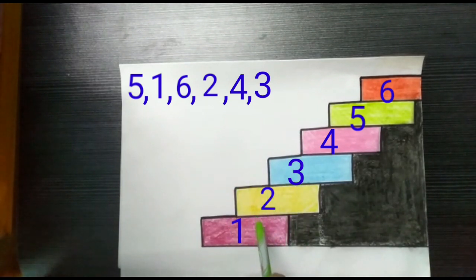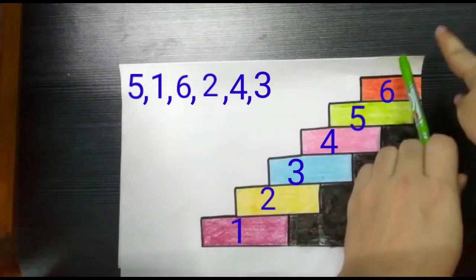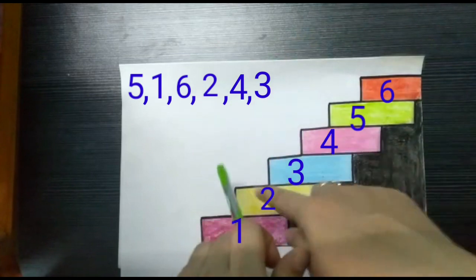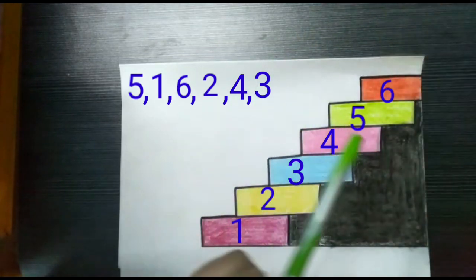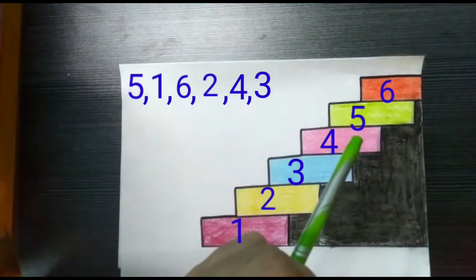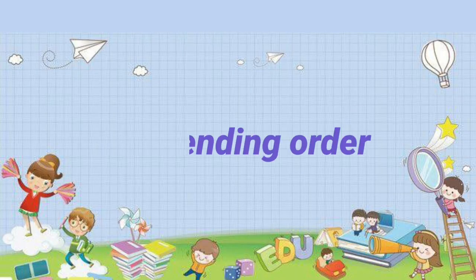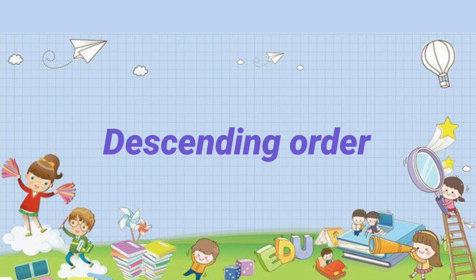Therefore, descending order moves from bigger number to smaller number, or from upstairs to downstairs. This is descending order or decreasing order. Children, I believe now everyone is clear with descending order.